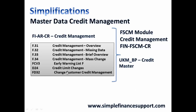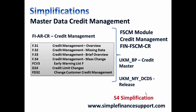For example, credit master data, which was normally maintained in transaction FD32, is now moving to UKM_BP as part of the FSCM model. Some of the release transactions from SD are going under transaction code UKM_MY_DCDS. These are the key simplifications happening in credit management.